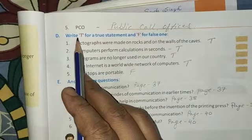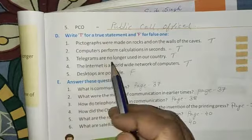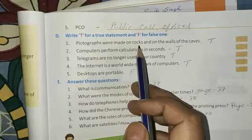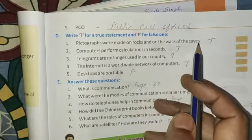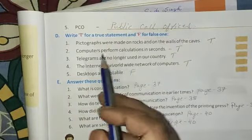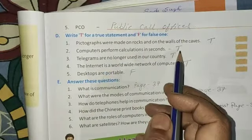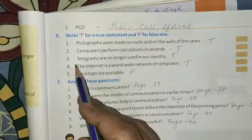Now next is D, exercise D, write true or false statement. Now number 1, pictographs were made on rocks and on the walls of the caves, that is true. Computers perform calculations in seconds, this is also true.